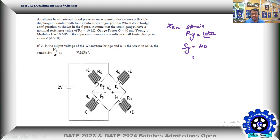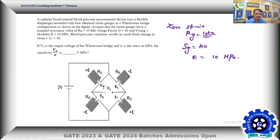Young's modulus of elasticity E is given as 10 mega-pascals. The blood pressure variations result in a small finite change in strain. I use lowercase 'e' for strain and sigma for stress experienced by the strain gauges. If V_out is the output of the Wheatstone bridge — which is a full bridge — it is full of sensing elements.